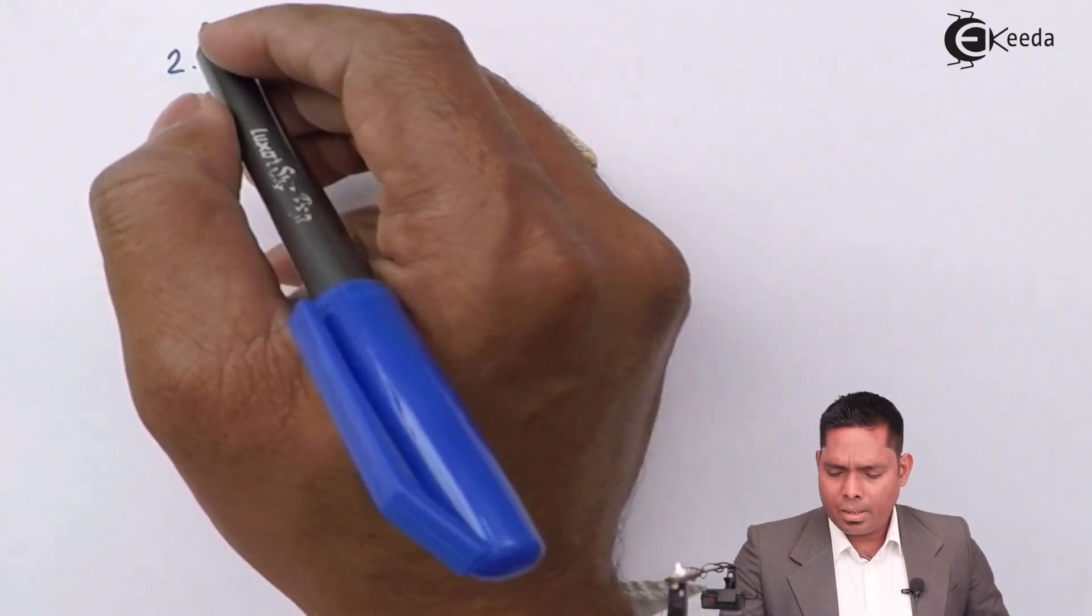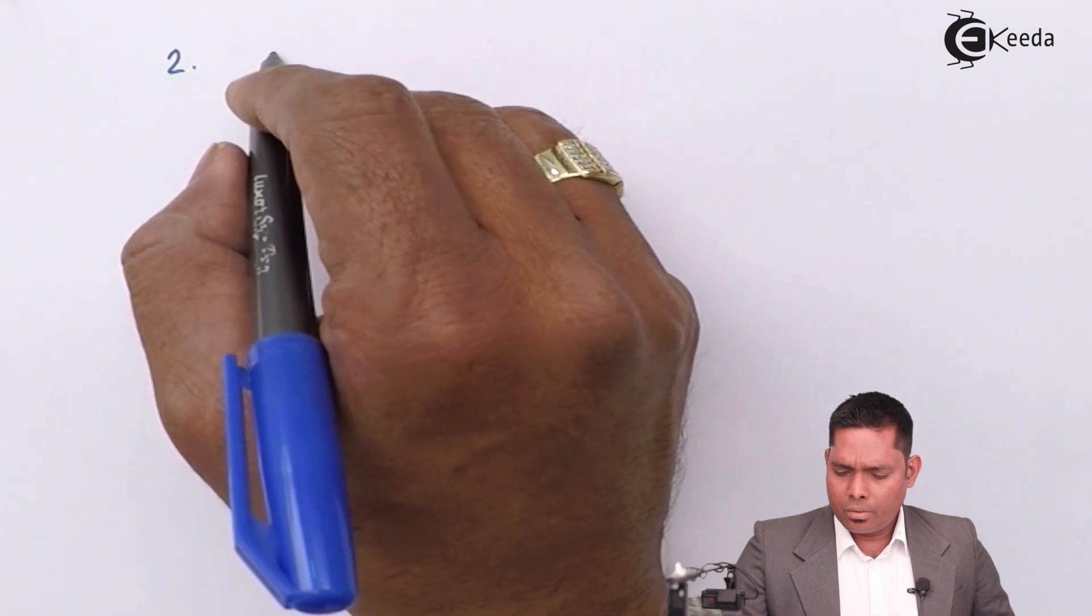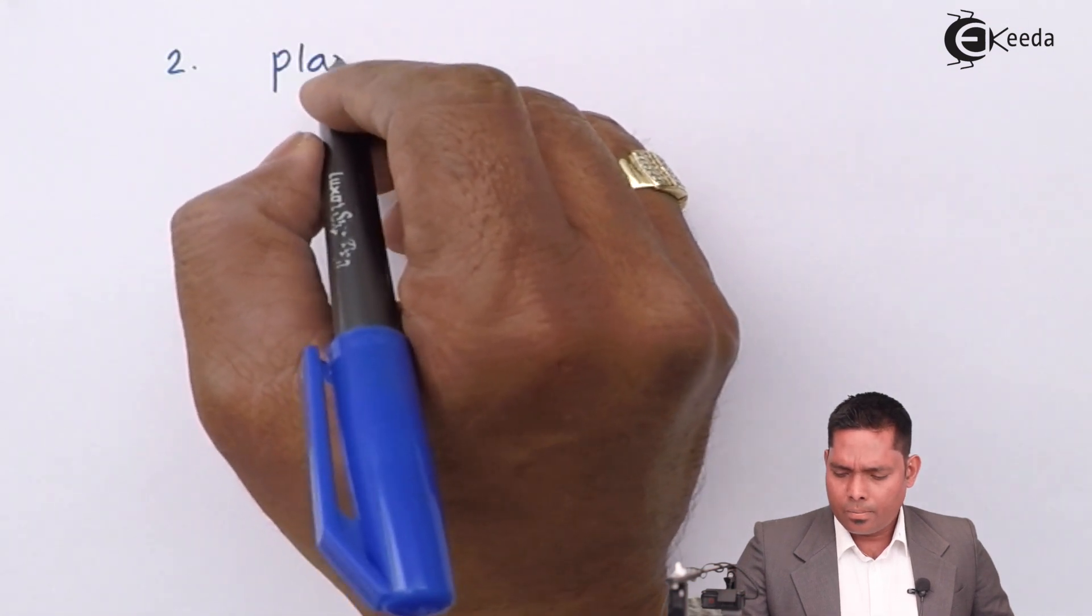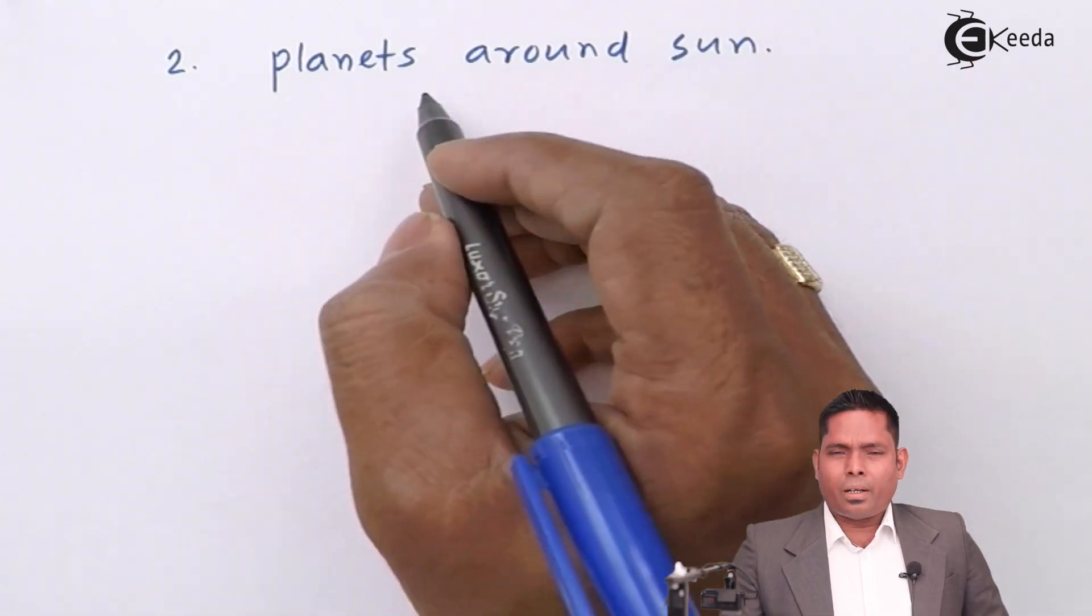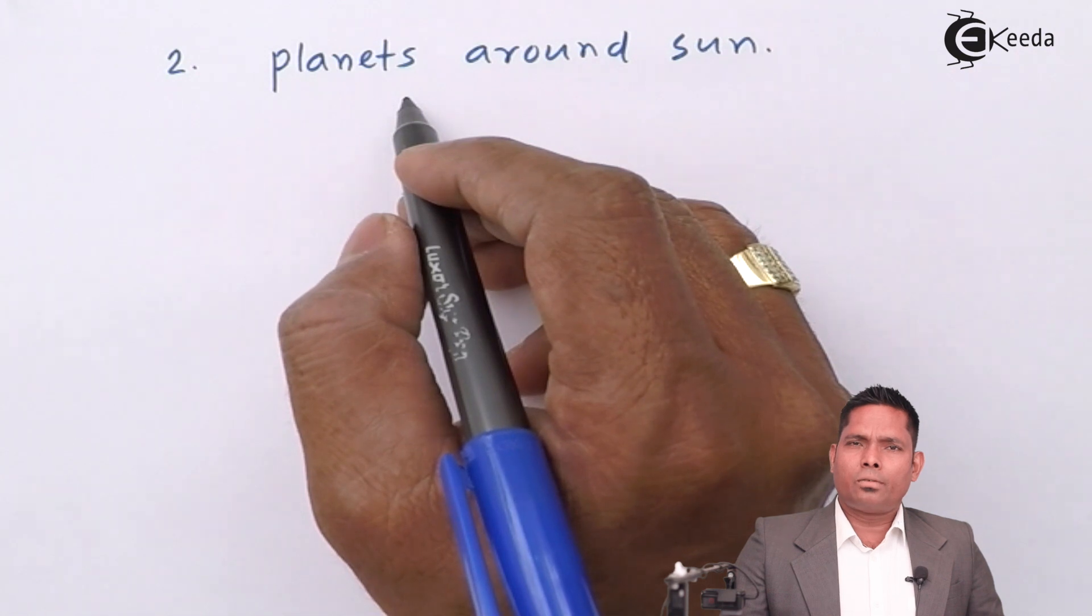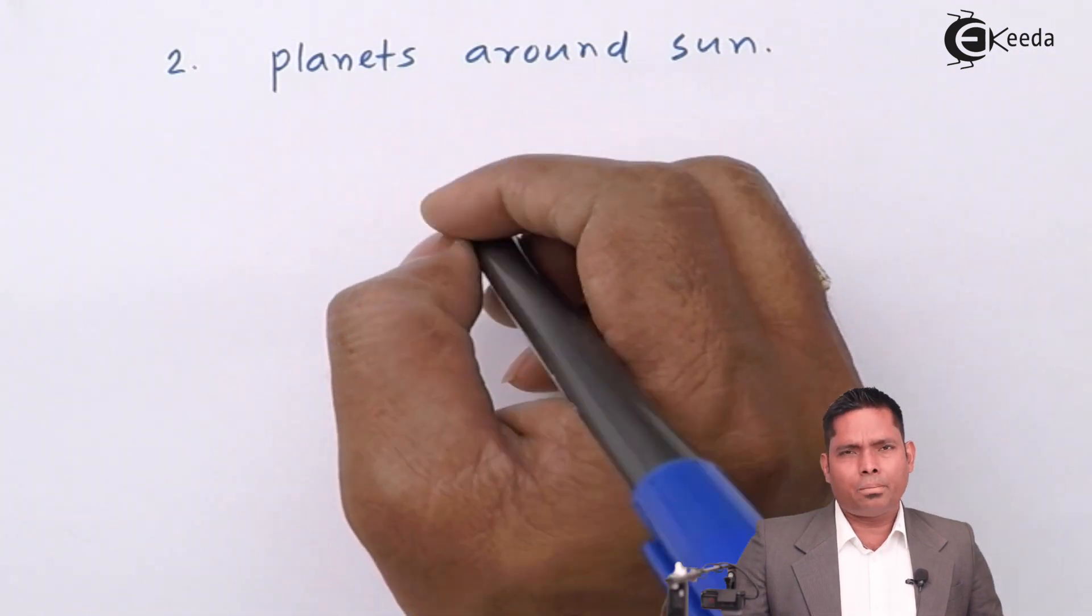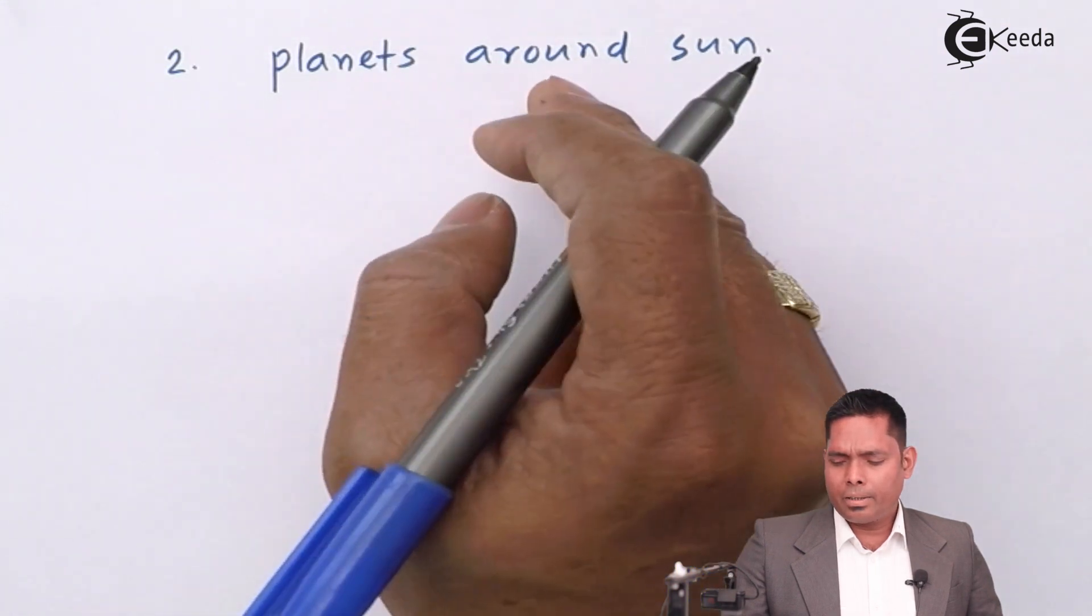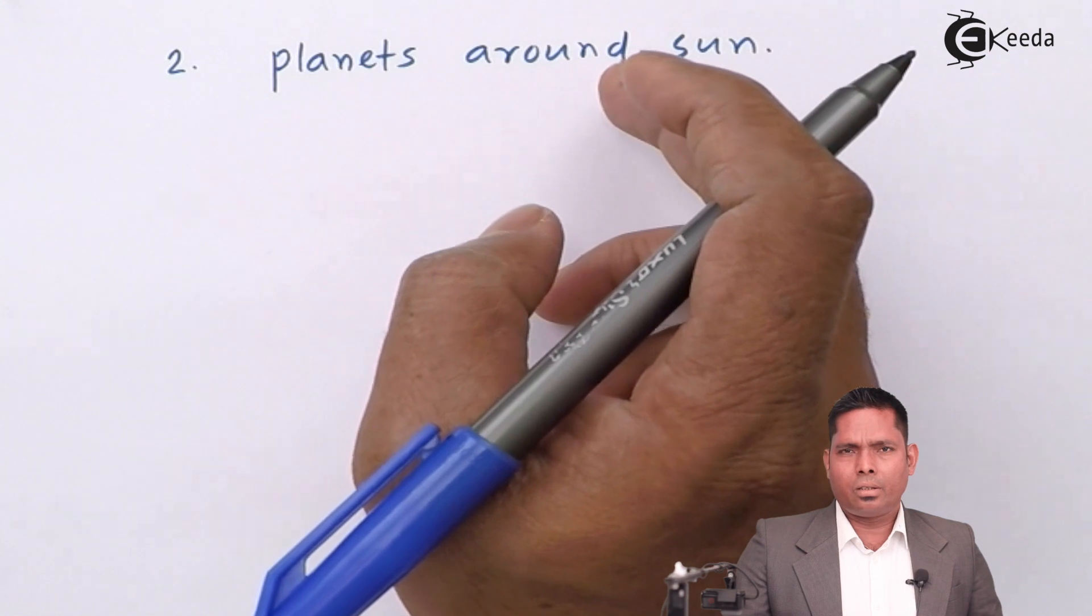We can have various examples like planets around sun. Though the path is not perfectly circular, in Kepler's laws, we will study that the path is elliptical. But for the time being, we can consider planet's motion around sun is circular.